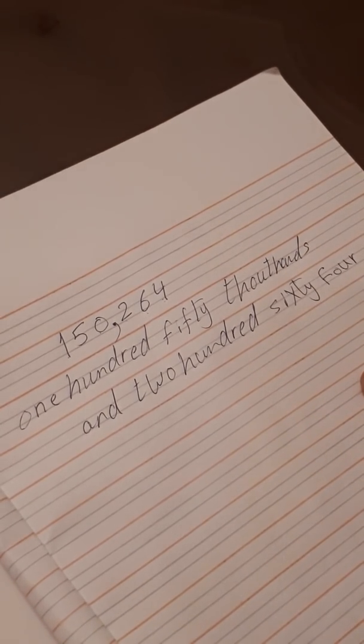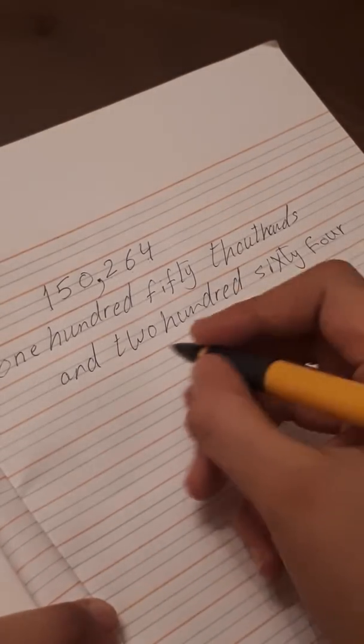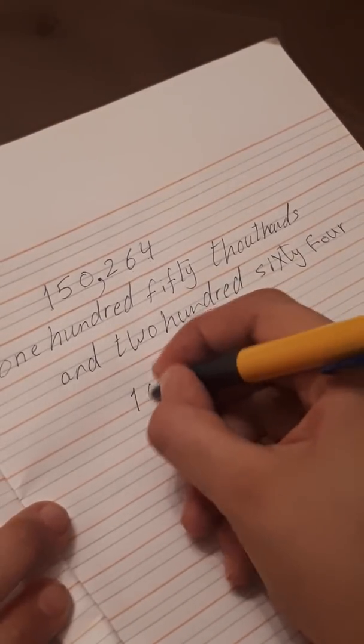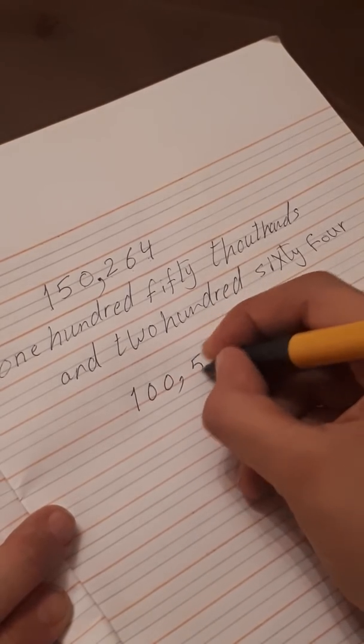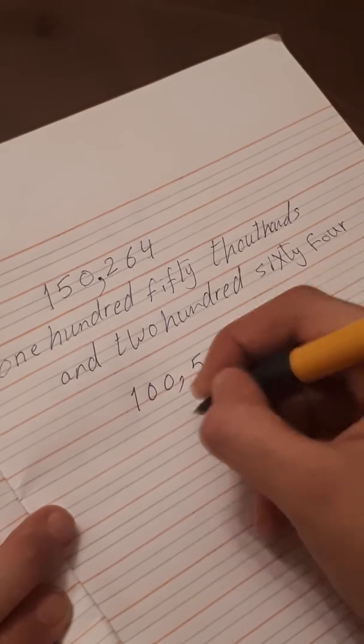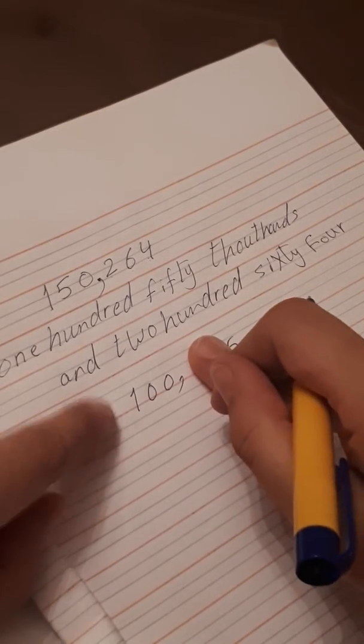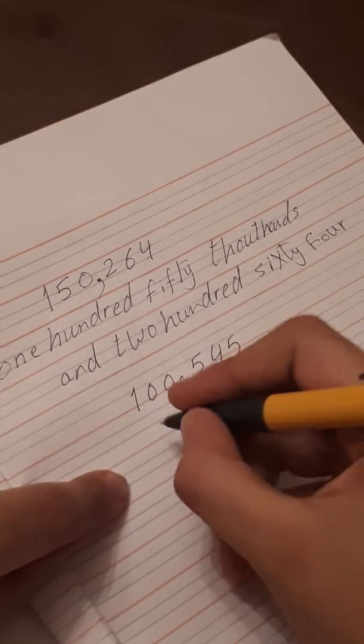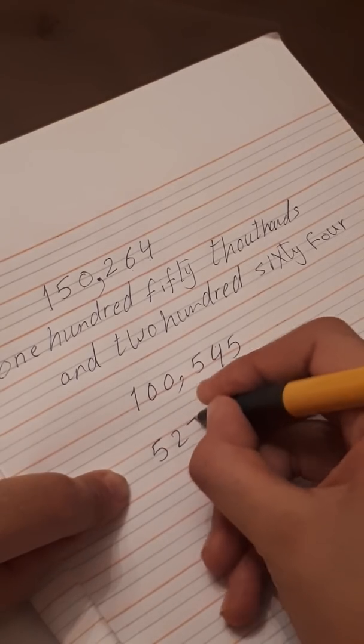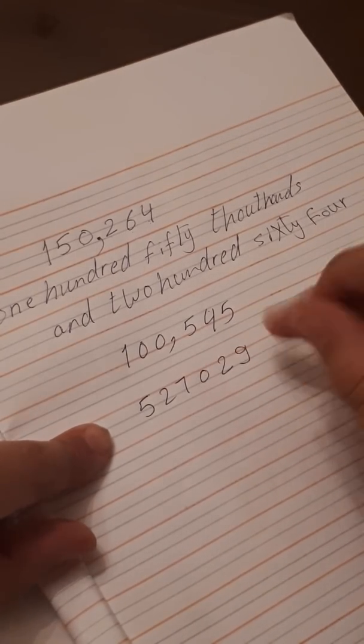We're supposed to practice reading all the numbers that are formed from six digits. Any number I have from six digits, and we'll try to change the places of the zeros in it, like this. This is one hundred... one hundred what? One hundred thousand and five hundred forty-five. Hide these three parts.